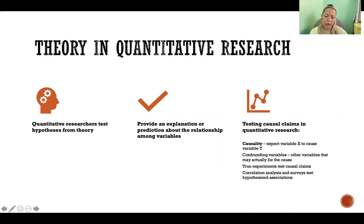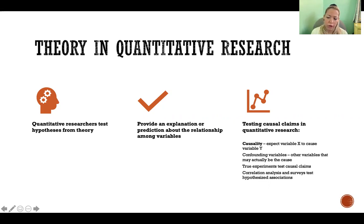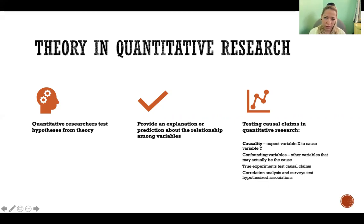If we're expecting one variable to cause another, a confounding variable would be a different, separate variable that might actually be what is causing the change in the dependent variable. True experiments test causal claims, and correlation analysis and surveys can test associations and relationships, but not necessarily detect causality.